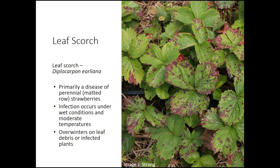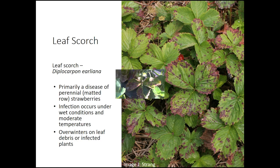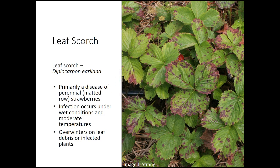Leaf scorch is primarily a disease of perennial strawberries or matted row systems. Infection can occur under wet conditions and moderate temperatures. Like leaf spot and other fungal leaf diseases, this pathogen overwinters in leaf debris and infected plants.